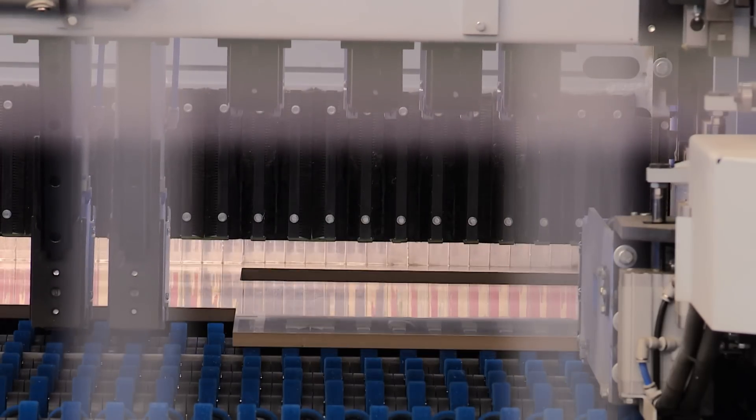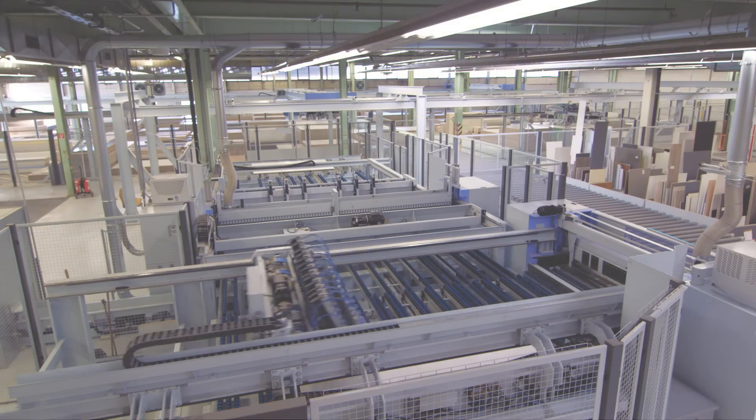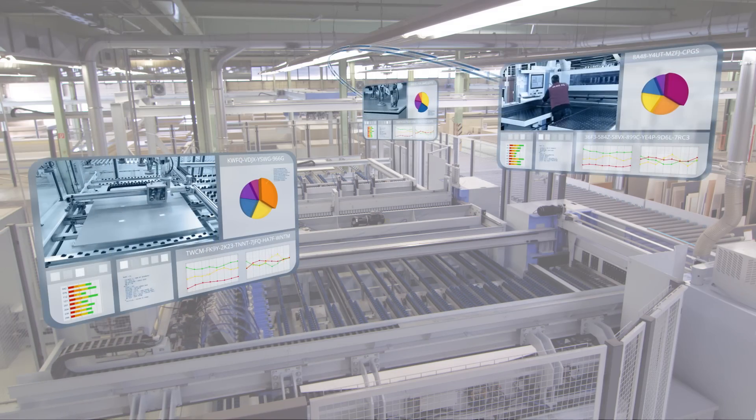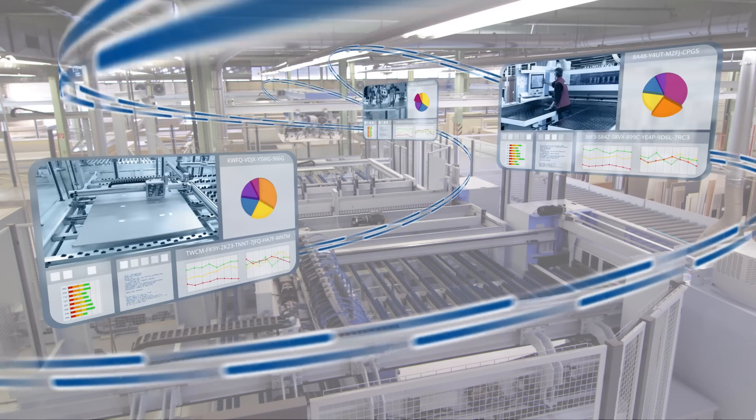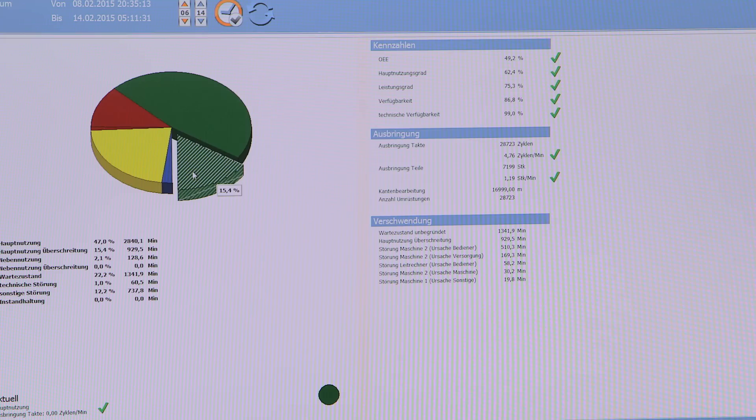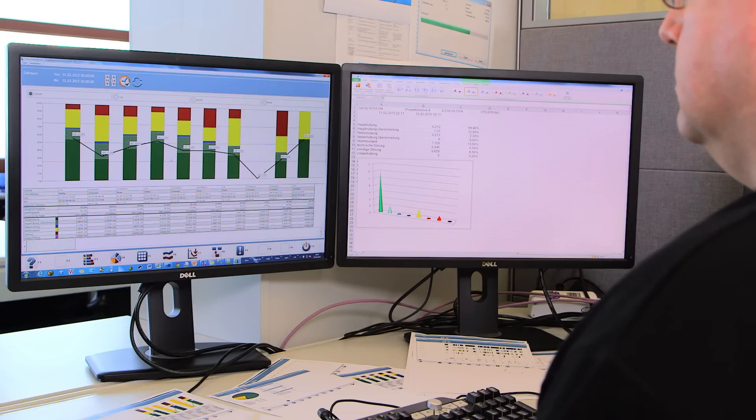The advantages of network production can be seen clearly here. The panels are sorted fully automatically and optimally fed into the production process. This makes it possible to optimize the plant. The transparent presentation of comparable data from various machines and plant components enables a comprehensive analysis.